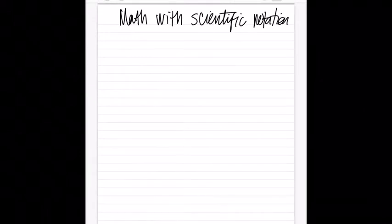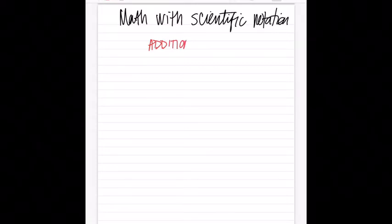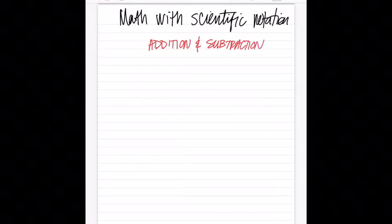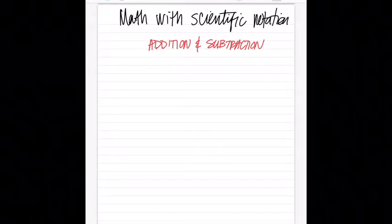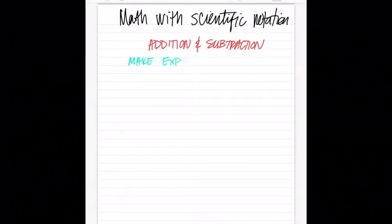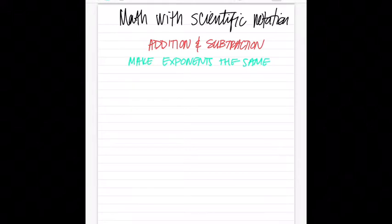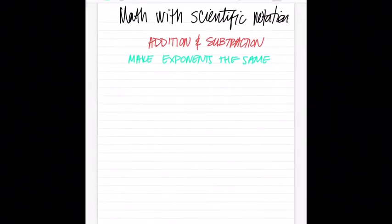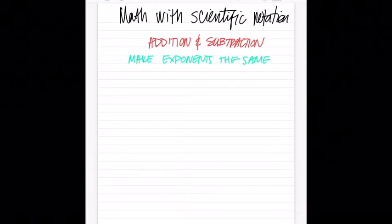First I want to talk about addition and subtraction. The rule for addition and subtraction is actually the same: make the exponents the same. I'm going to give you a couple of problems — let's write these out real quick.